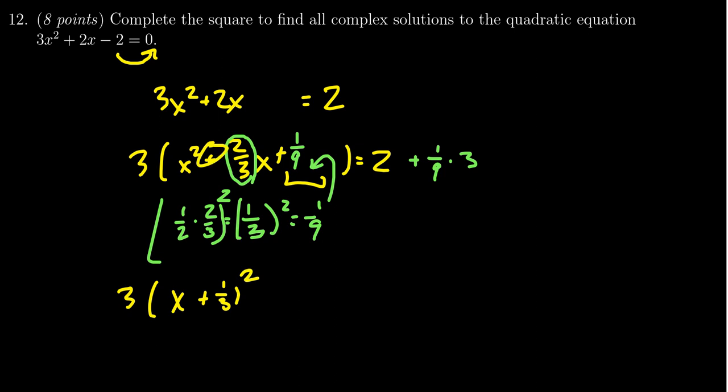If this is a plus, this is a plus. If this was a minus, then this would also be minus. The signs match in that regard. So the left-hand side is now factored. We get a 2 plus, well, 3 times 1 ninth is 1 third, like so.